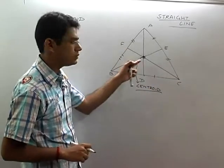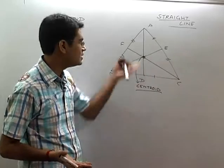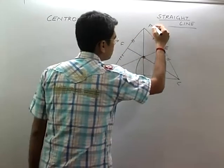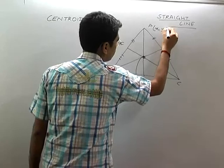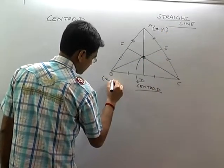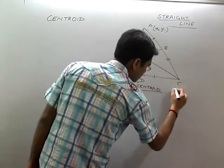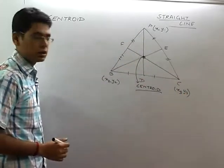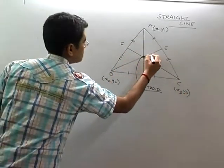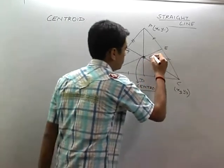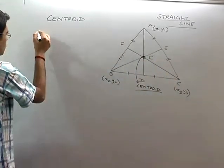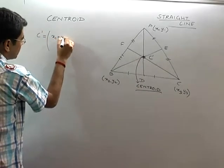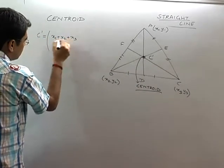In fact, the centroid is the point where the medians meet. Medians are also our own. If the vertices are (x1, y1), (x2, y2), and (x3, y3), then the centroid G — I'll call it G — is given by: x1 plus x2 plus x3 divided by 3, and y1 plus y2 plus y3 divided by 3.